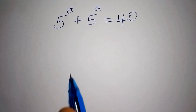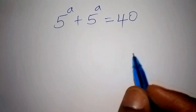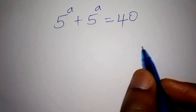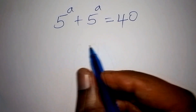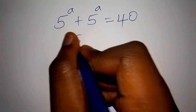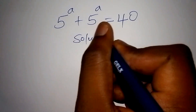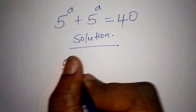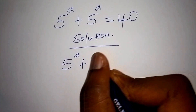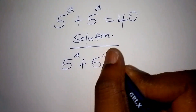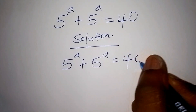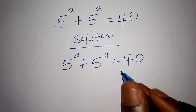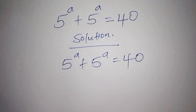Hello, let's work this maths problem within the shortest time possible. Remember to subscribe to this channel and watch out up to the end. Let's now begin with the solution. The maths problem is: 5 to the power of a plus 5 to the power of a equals 40. Our goal is to find the value of a.